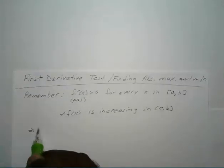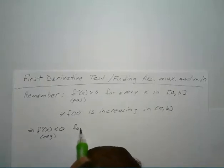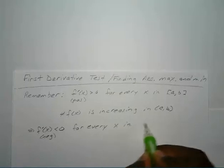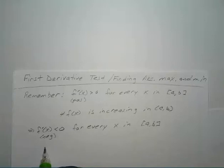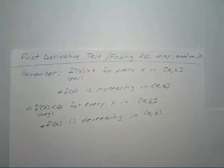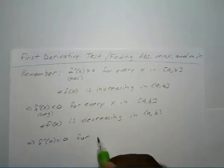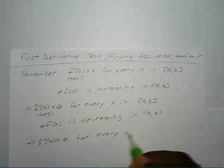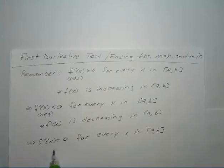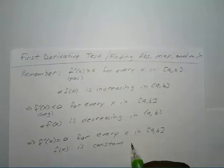Also, if your first derivative is less than zero — negative — for every x value in an interval from a to b, that lets you know that your function is decreasing in that interval. And if your derivative is equal to zero for every x value in an interval, then that lets you know that your function is constant in that interval.